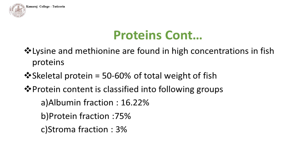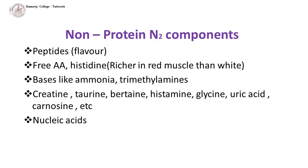50 to 60% of the weight of fish is skeletal protein. Protein content of fish is classified into three different groups: albumin, protein and stroma, with 16.22%, 75% and 3% respectively. Other than proteinaceous components, there are few non-proteinaceous components such as peptides, free amino acids, ammonia, trimethylamine, creatine, taurine, betaine, histamine, glycine, uric acid, carnosine and nucleic acids.